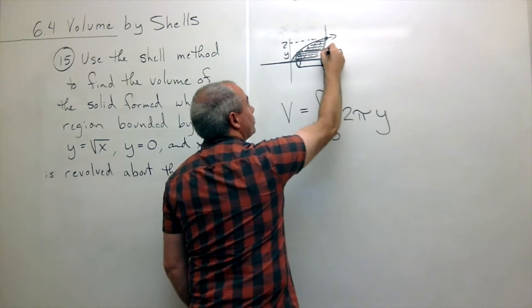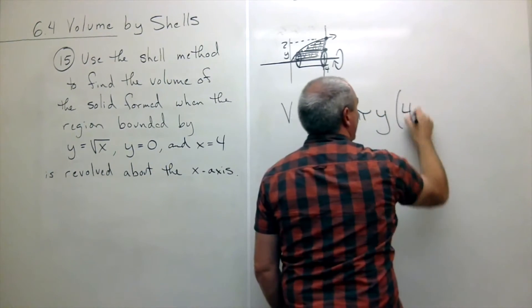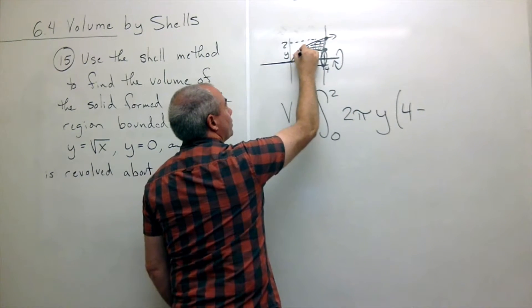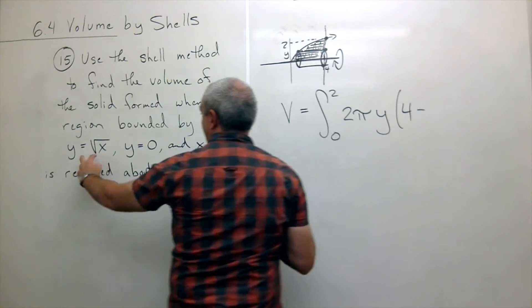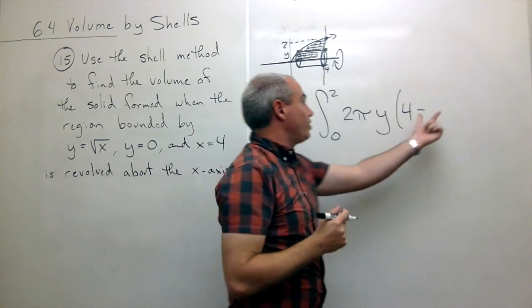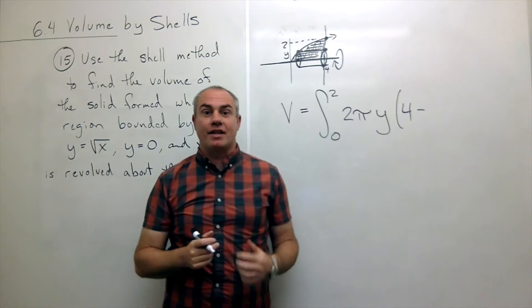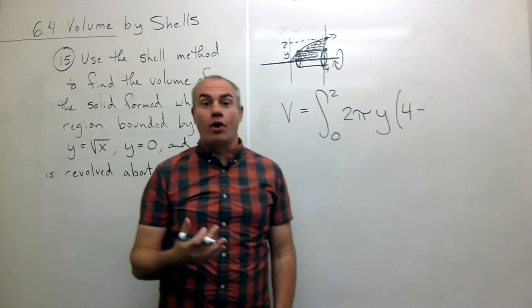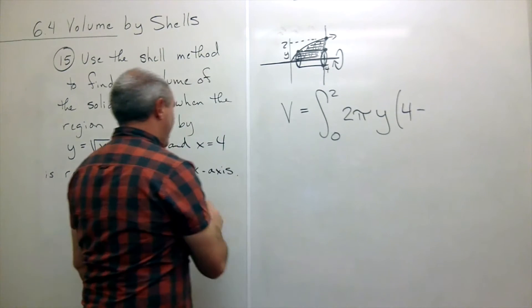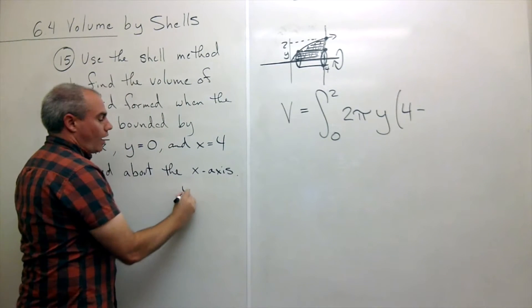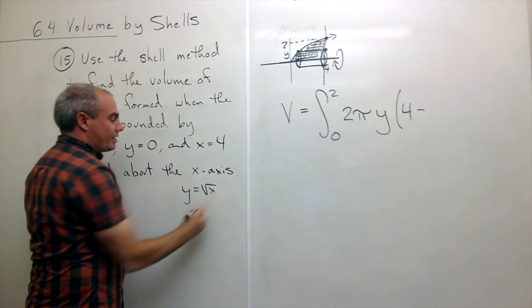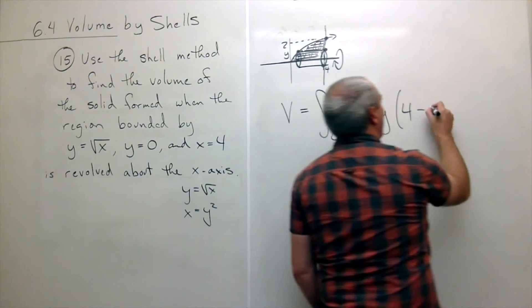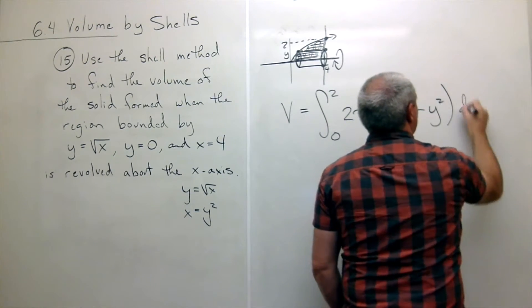Well, the top function is this x equals 4. So I get 4 minus the bottom function. The bottom function is y equals the square root of x. But I certainly don't want to put square root of x in there. I need y stuff in there. So I need to solve that for x. So if I have y is equal to the square root of x, that means that x is equal to y squared. So I put in y squared dy.